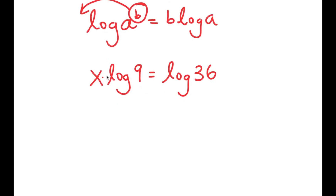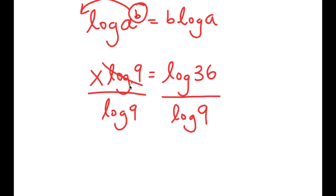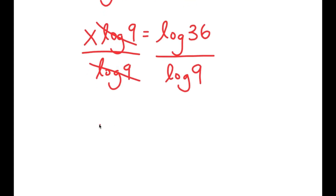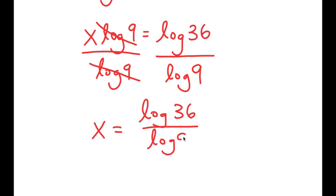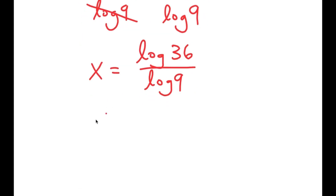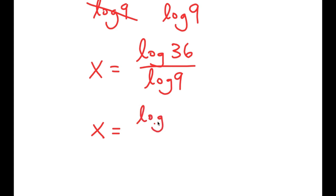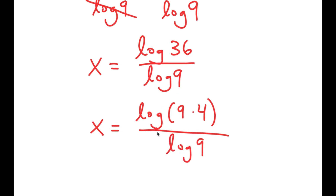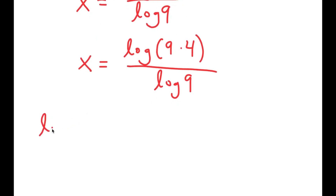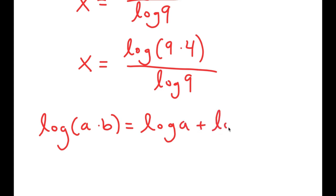Now I want to isolate x, so I divide both sides by log 9, and these cancel out, giving x equals log 36 over log 9. We aren't done yet because we want no logarithms in our solution. So I'm going to rewrite log 36 as log of 9 times 4, and use the property that log a times b equals log a plus log b.